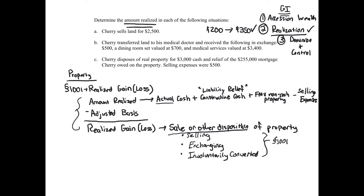Finally, selling expenses: if you're selling a house and you have to pay a realtor, an attorney, or other costs related to actually selling the property, those are selling expenses. That's really the four-part technical formula for calculating amount realized.